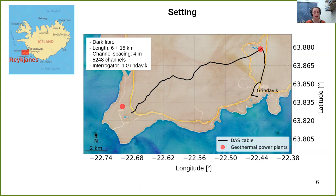The location and orientation of the cable is shown in the right figure. The cable is represented by the black thick line and can be separated into two parts: one part with a length of six kilometers extending from the city Grindavik to the north up to the geothermal power plant, and a second part extending from east to west with a length of approximately 15 kilometers. The channel spacing is four meters, which leads to a total number of 5,248 channels. The interrogator is located in Grindavik.